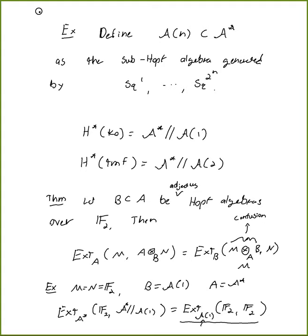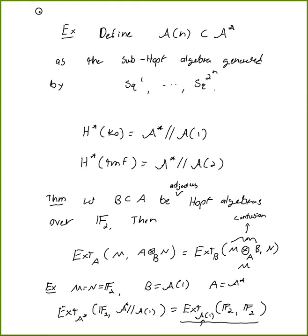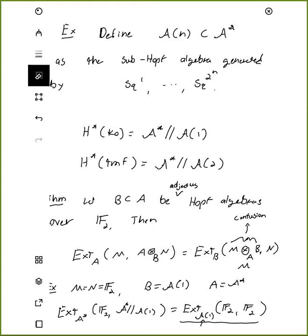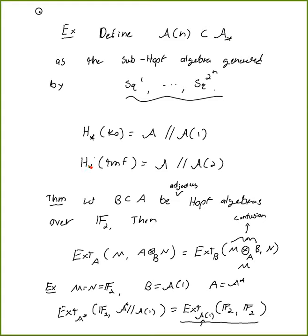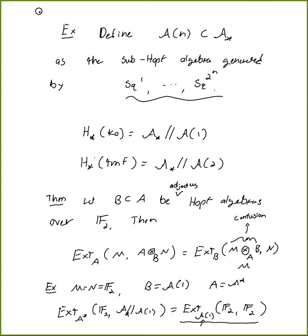There's a question about the left/right-handedness of the functoriality — specifically, whether A-star mod A(1) should be on the left or right-hand side. This was something I realized while writing: I kept switching between cohomology and homology. I want to work with homology now, which might address the confusion. The change of rings theorem should hold both cohomologically and homologically; Ravenel's appendix works explicitly with comodules and the homological version.